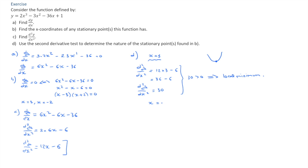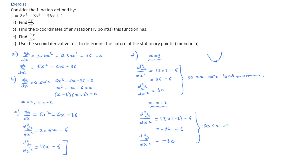At x equals negative 2, we calculate the second derivative: d²y/dx² equals 12 times negative 2 minus 6, which equals negative 24 minus 6, giving us negative 30. Since negative 30 is negative, the second derivative is negative at that stationary point. Because the second derivative is negative, the curve is concave downward, so our stationary point must be a local maximum.